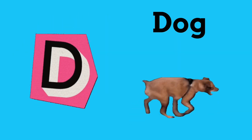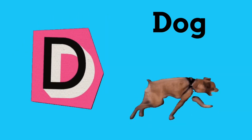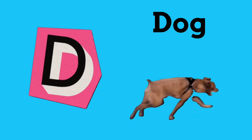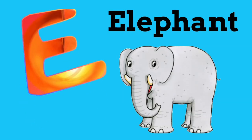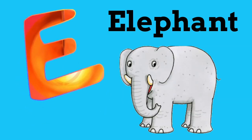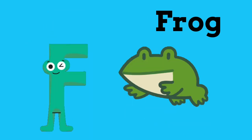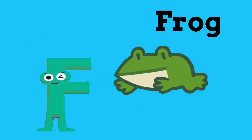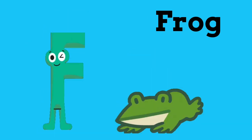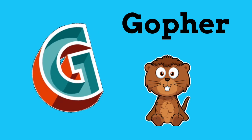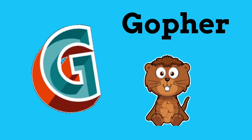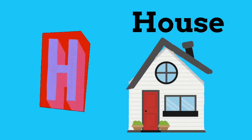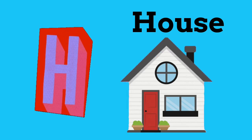D is for Dog. Dog. E is for Elephant. Elephant. F is for Frog. Frog. G is for Gopher. Gopher.